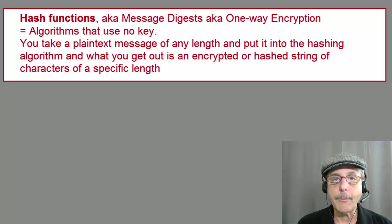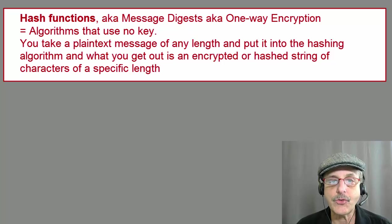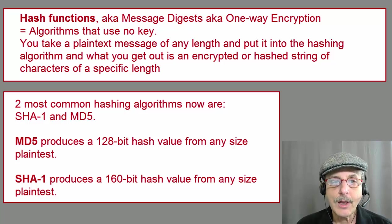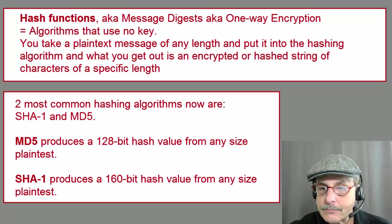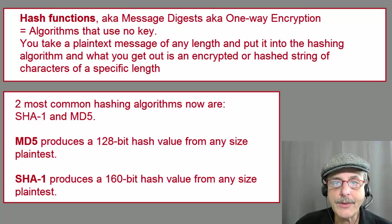Hash functions, also called message digests or one-way encryption, are algorithms that use no key. You can take a plain text message of any length and put it into the hashing algorithm, and what you get out is an encrypted or hash string of characters of a specific length, depending upon what hashing algorithm was used. The two most common hashing algorithms are SHA-1 and MD-5. MD-5 produces a 128-bit hash from any size plain text, and SHA-1 produces a 160-bit hash value from any plain text size. Be sure you understand that hashes are one-way encryption. You cannot take a hash and decrypt it to find the original string that created it. This is based on a great deal of math behind it, although we just see the hashing algorithm as a black box.